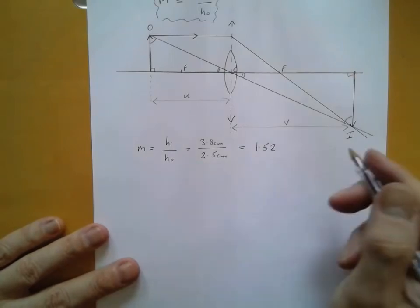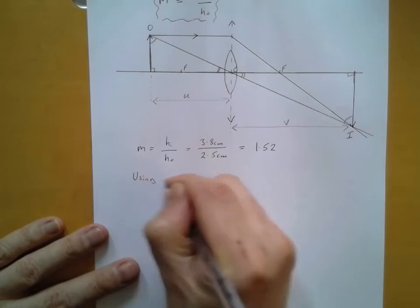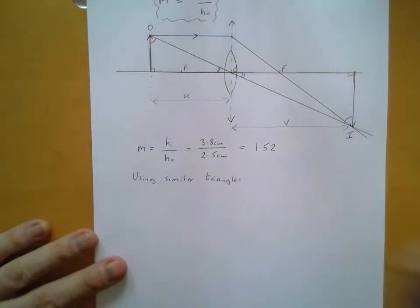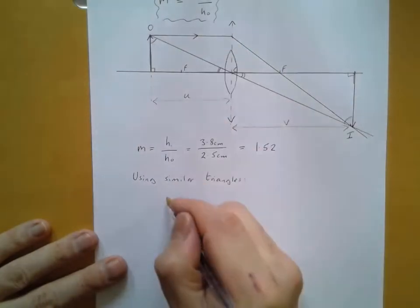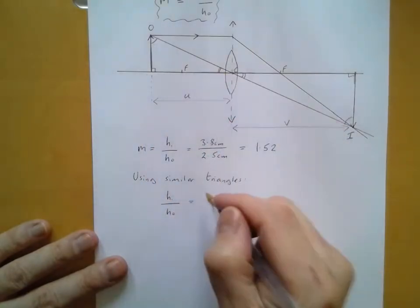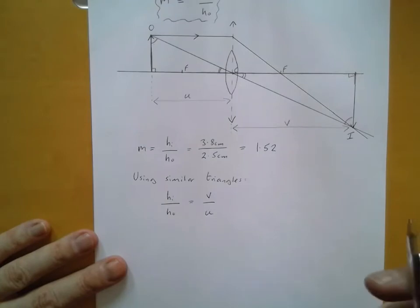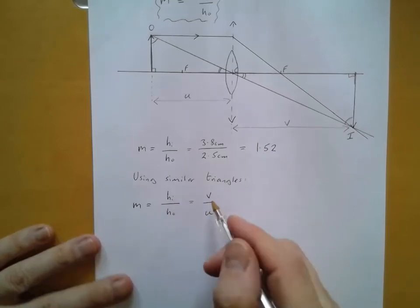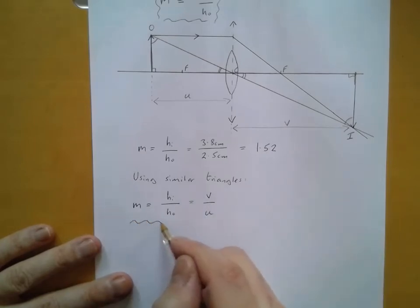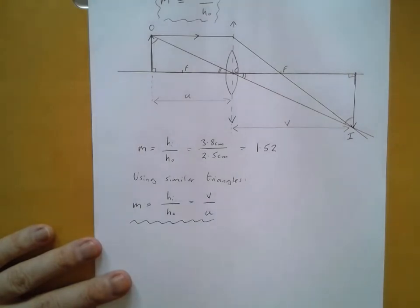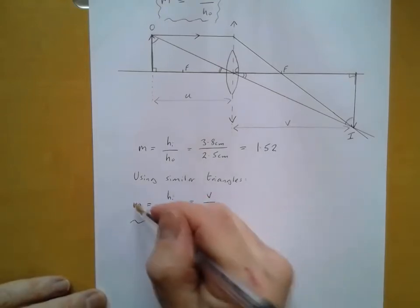Using similar triangles, corresponding sides are in the same proportion. So the ratio of image height to object height, h_i over h_o, equals the ratio of image distance to object distance, v over u. Therefore magnification also equals v over u. This is very useful: if we know the magnification and either v or u, we can calculate the unknown, and if we know v and u but not the heights, we can still calculate the magnification.